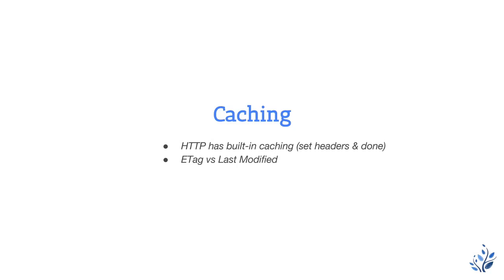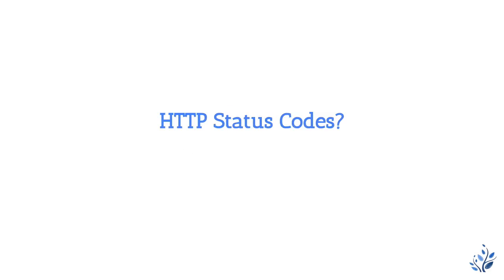Can REST help us with caching? HTTP has a built-in caching mechanism. You can set headers and you're done. There are some status codes based on which you will get the same data faster. For example, there is ETag versus Last-Modified — these are part of the HTTP protocol which you should look into. This leads us to HTTP status codes.